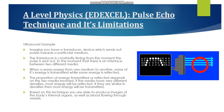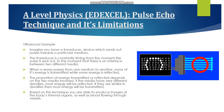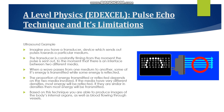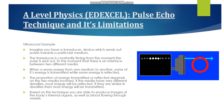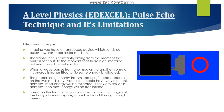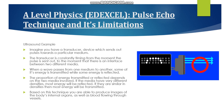As the waves interact with the given object — which in this case is a red circle — some of that energy is reflected back to the transducer, while some of that energy is also transmitted through the object. The transducer times how long the reflections take and is able to map the precise location of the given object in real time.